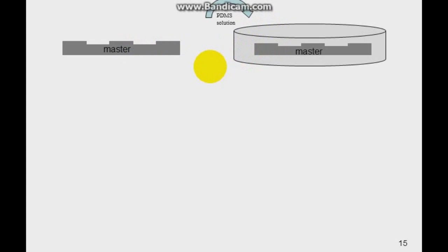After we create the master, what we do is we'll place the master in a walled container, let's say in a petri dish. Next, we'll pour a solution of PDMS, or polydimethylsiloxane, which is the solution used to make the stamp. We'll pour that solution into the petri dish.